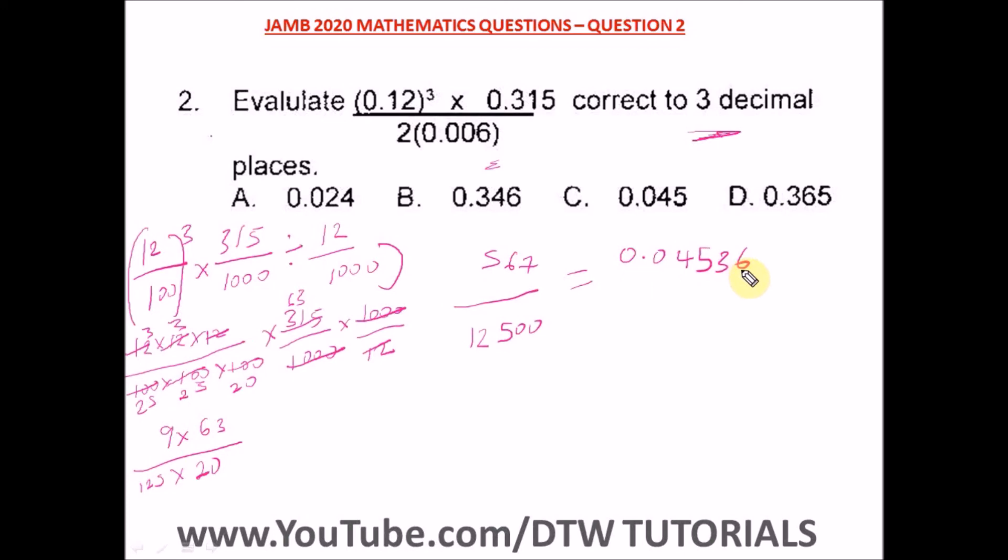Remember our math: if the number before what we are eliminating is 5 or more, we add one. But we need three decimal places, so we have 4 here. This is not 5 or more than 5, it's just less than 5, so when we eliminate this we don't have to add to this. So we have our answer: 0.045. Our answer is C.